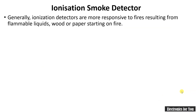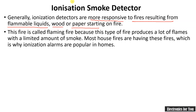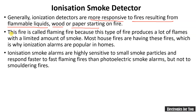Now let's start with the first type: the ionization smoke detector. Ionization smoke detectors are more responsive to fires resulting from flammable liquids, wood, or paper. Since these materials are commonly found in homes, ionization smoke detectors are preferred for home use. They are highly sensitive to small smoke particles and respond faster to fast flaming fires than photoelectric smoke alarms, but not to smoldering fires.